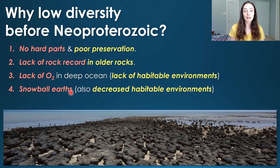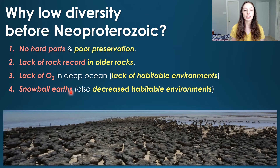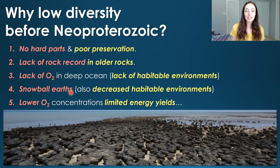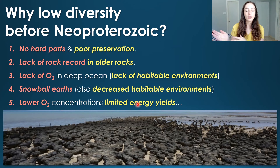Snowball Earth also decreased habitable environments. These events came about because of Earth's oxidation and cooling from more carbon burial and oxygen released to the atmosphere — less carbon dioxide and methane meant cooling and eventually glaciation. These were really intense ice ages, almost fully covering the Earth. Lastly, lower oxygen not only decreased habitable seafloor environments but also limited energy yields — oxygen hadn't yet risen again as it would later in the Neoproterozoic, when a later oxidation event helped raise oxygen to the point that organisms could have metabolisms with higher energy yields.